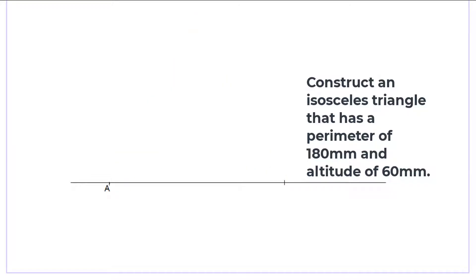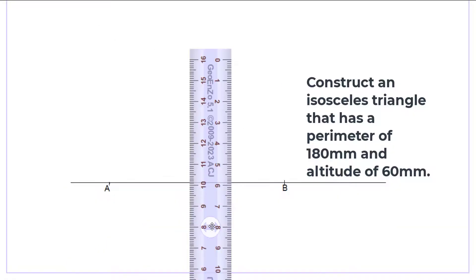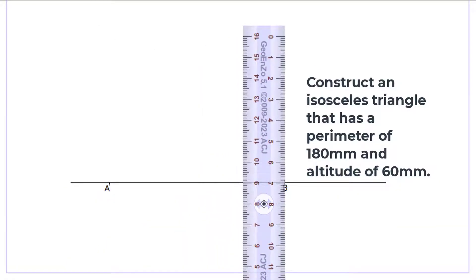Then at point B, we'll draw the altitude, that's a perpendicular distance, to get the line BC which is a distance of 60 millimeters.